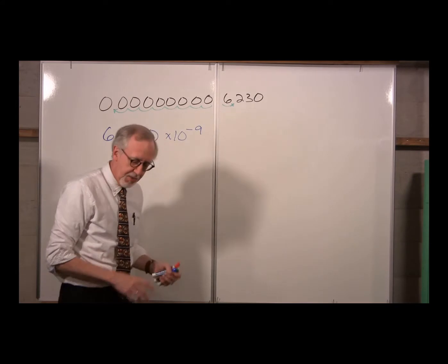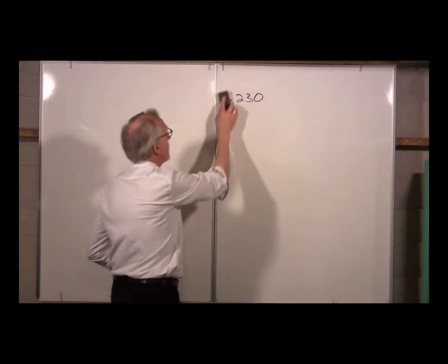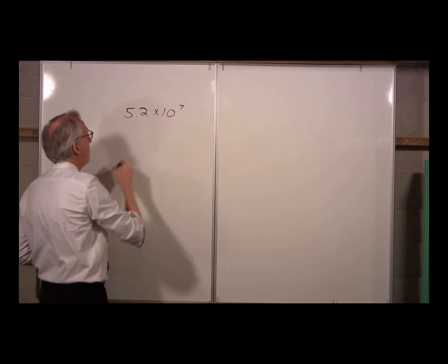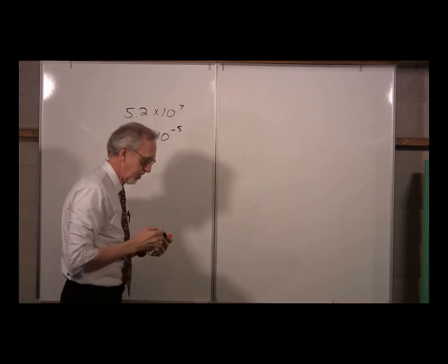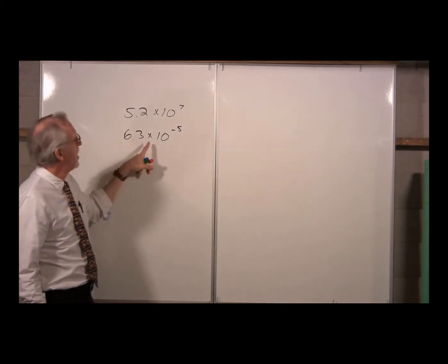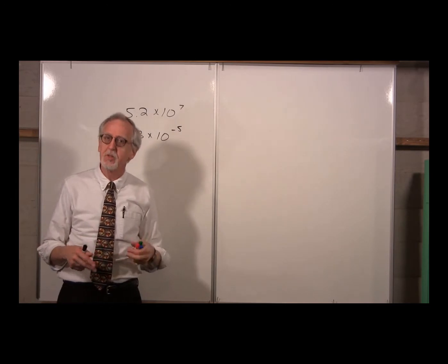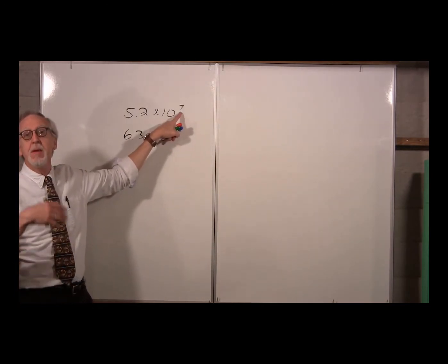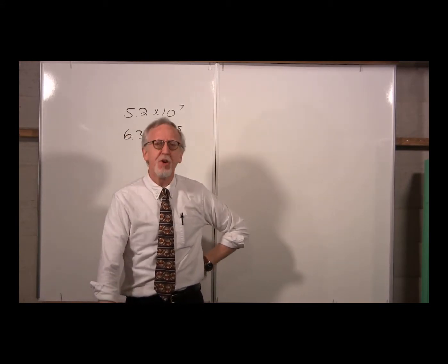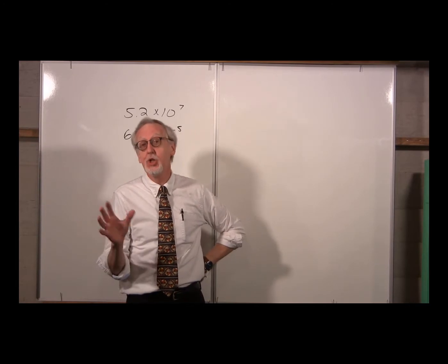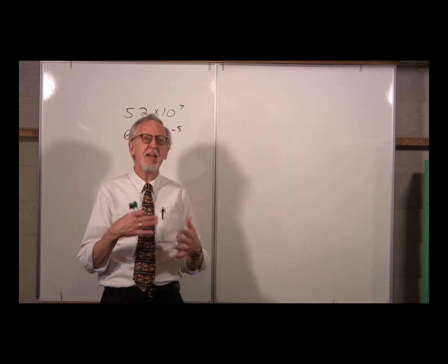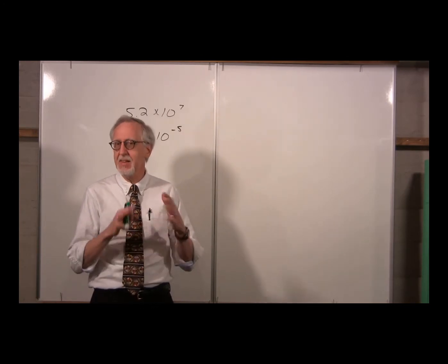Now keep a very general rule of thumb in mind. Numbers with positive powers of 10 - like 5.2 times 10 to the 7th - are large numbers. Numbers with negative powers of 10 - like 6.3 times 10 to the minus 5 - are small numbers. Very simply: positive powers mean big numbers, negative powers mean small numbers. Whenever you do any calculation, it's really important to try and keep in mind what your answer should look like, at least approximately.